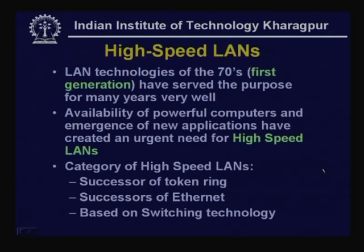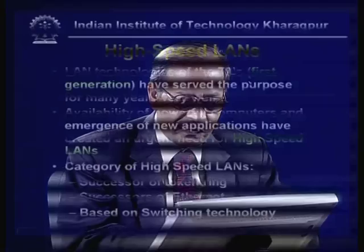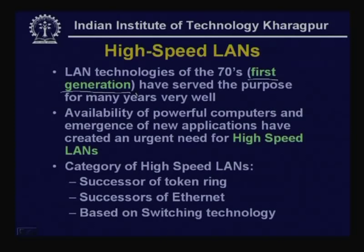The LAN technologies of the 70s — the IEEE 802 committee's LANs: 802.3, 802.4, and 802.5 — can be considered as first generation local area networks. Their speeds varied in the range of 10 to 16 megabits per second. But the availability of powerful computers (technology push) and the emergence of new applications have created an urgent need for high speed LAN. Because of VLSI advancements, it is now possible to develop circuits operating at very high speed.